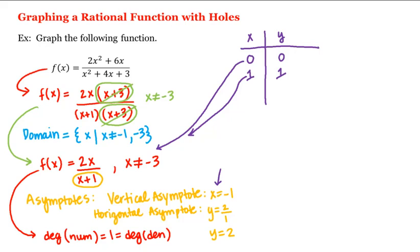When x = negative 2, we get 2(−2)/(−2+1) = −4/(−1) = 4, so y = 4. When x = negative 4 — notice we're skipping negative 3 because it's not in the domain — we get 2(−4)/(−4+1) = −8/(−3), so y = 8/3.